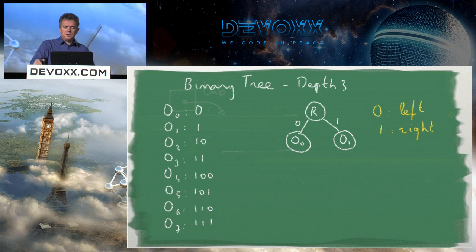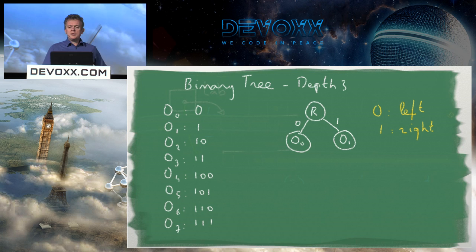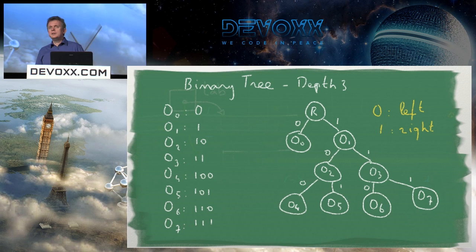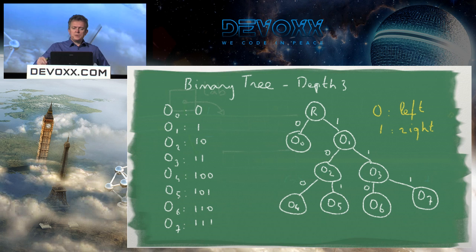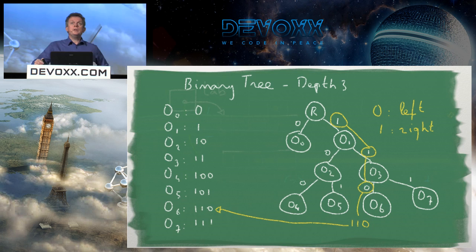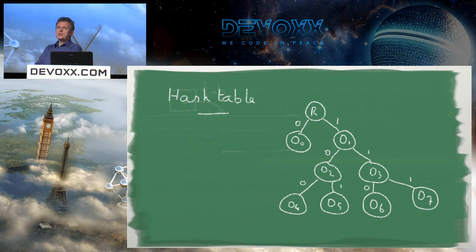I create a root pointer R. Every time I read a zero I go left, every time I read a one I go right. So to place element 2, I go right then left; for element 3, right then right. I keep building the tree this way — it goes deeper and deeper but never grows under the first zero branch.